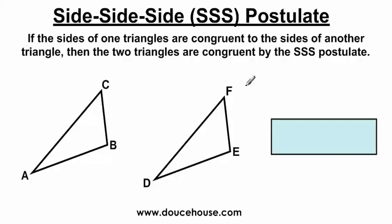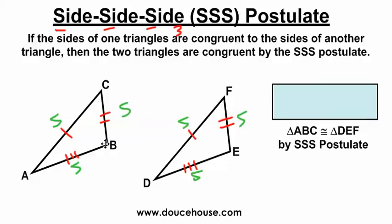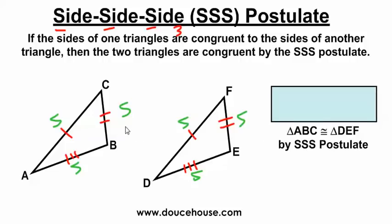The Side-Side-Side postulate: if the three sides of one triangle are congruent to the three sides of another triangle, then the two triangles are congruent by SSS. For example, if side AC is congruent to DF, side CB is congruent to FE, and side AB is congruent to DE, then since all three sides have a corresponding congruent side, we can prove triangle ABC is congruent to triangle DEF by the Side-Side-Side postulate.